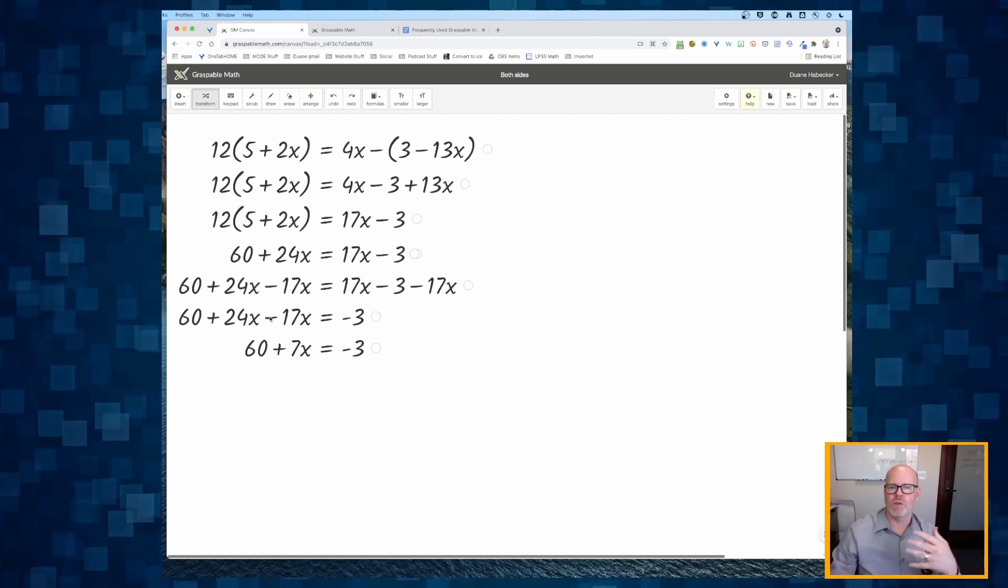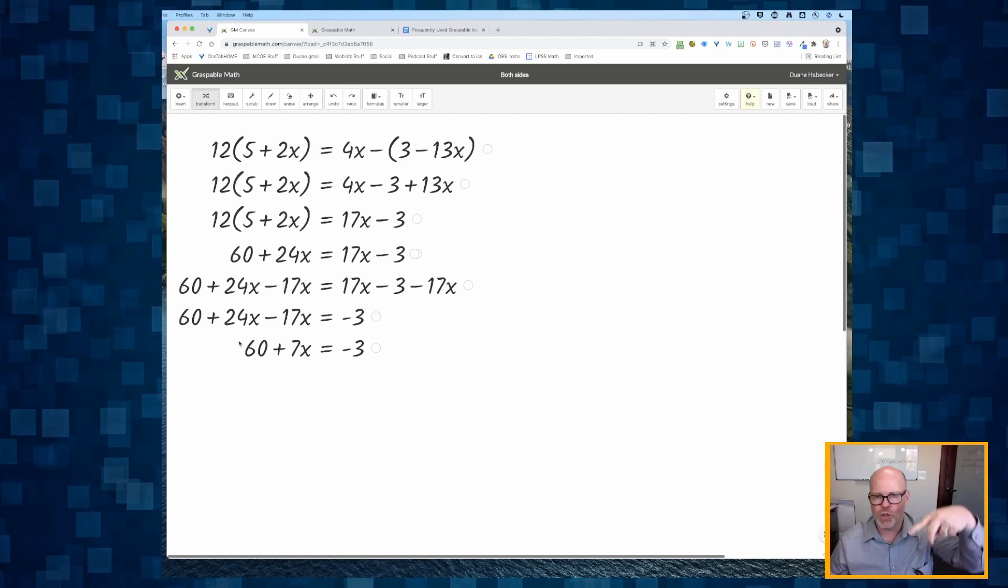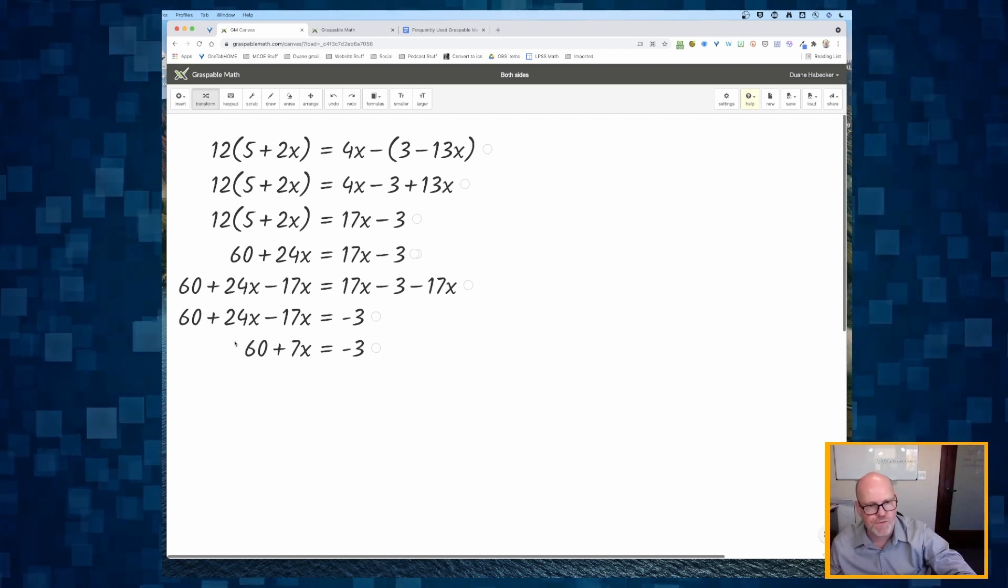Now I get a nice equation with variable on one side. I want to get rid of that 60. So two ways to do it. First way, I'm going to hold down the shift key,